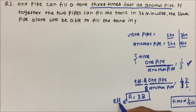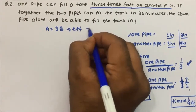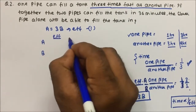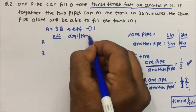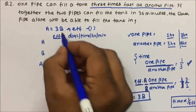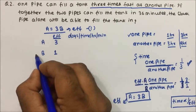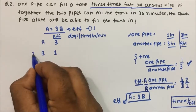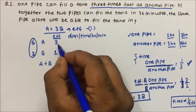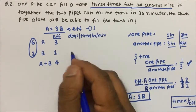We have the efficiency equation A = 3B. Writing a table for A, B, and A+B with efficiency and time columns: if B = 1, then A = 3. A+B efficiency becomes 1+3 = 4. You can put any value for B — say 2, then A becomes 6 — and the answer will remain the same.